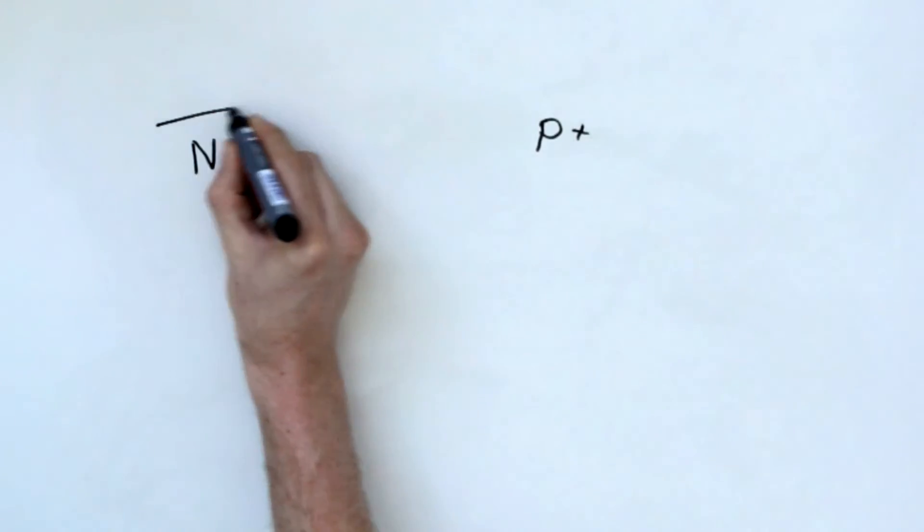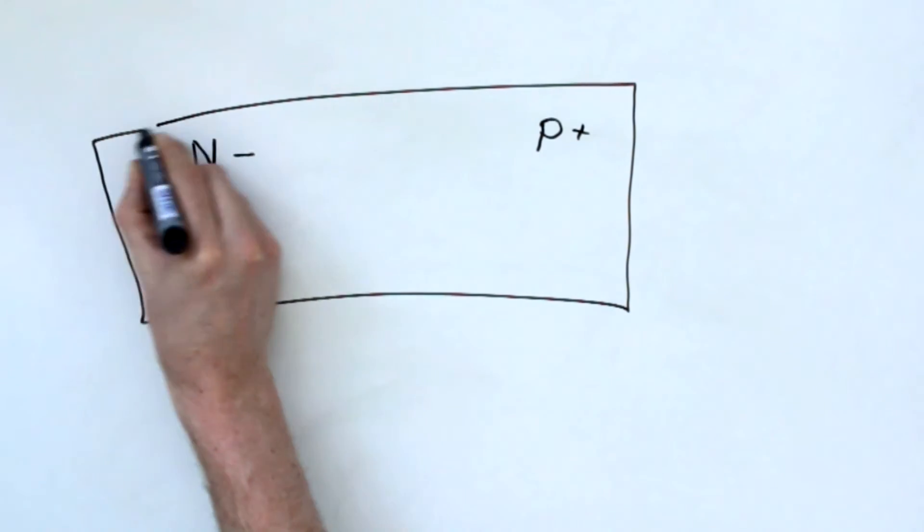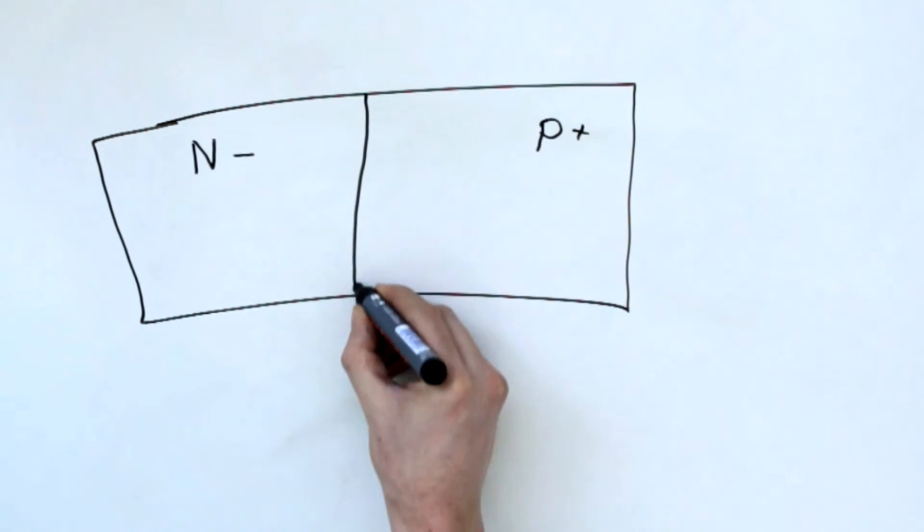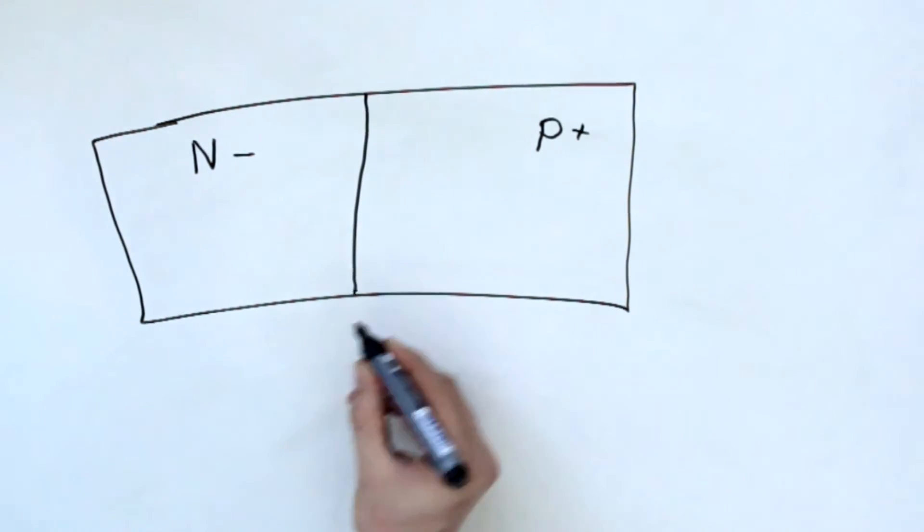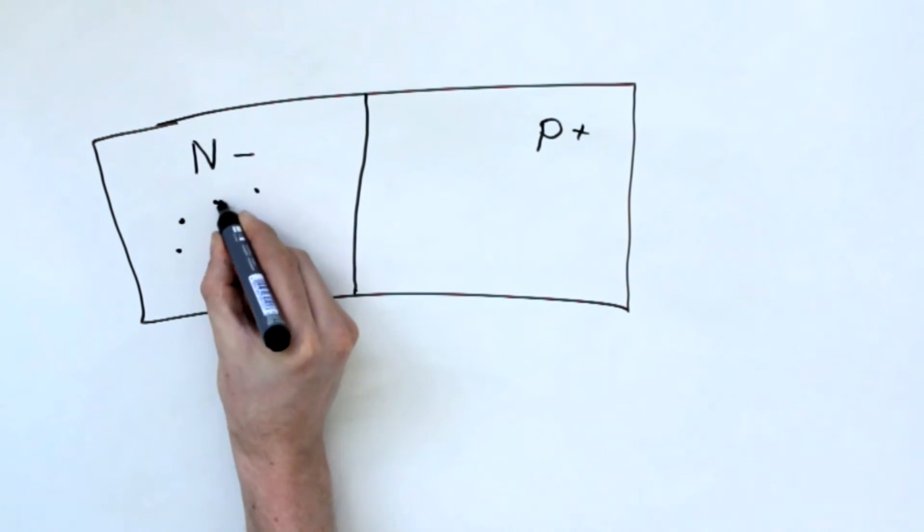When an N-type and P-type semiconductor are placed on top of each other, you create what's called a P-N junction. P-N junctions are the basis of diodes and transistors and also solar panels.